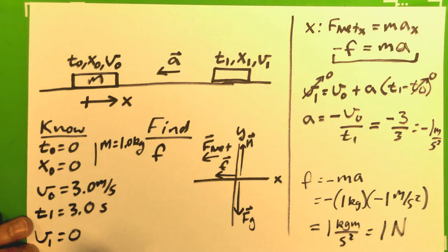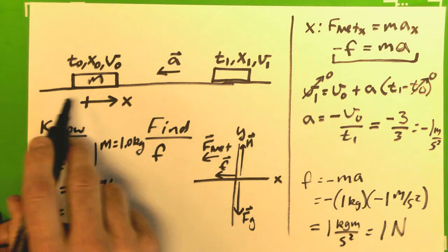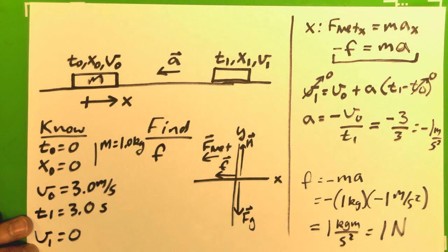So, it's a 1 newton force to cause it to slow down over 3 seconds. Again, reviewing those units, kilograms meters per second squared is a newton, or mass times an acceleration.